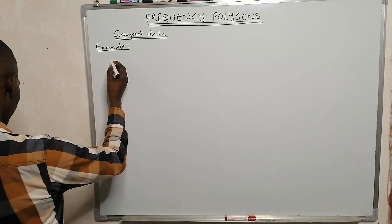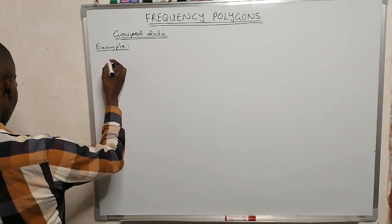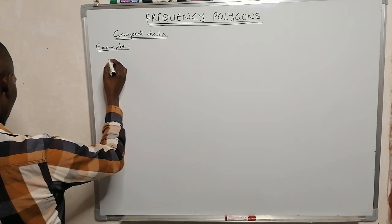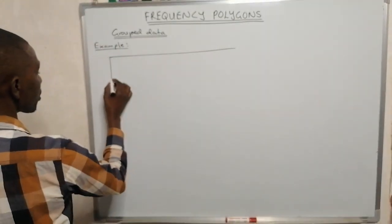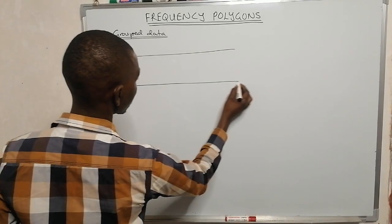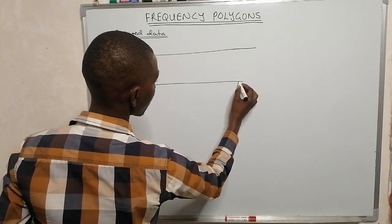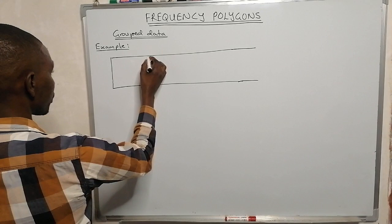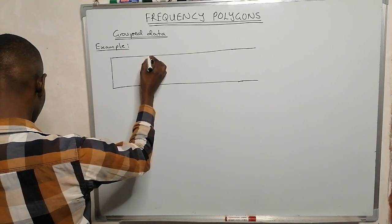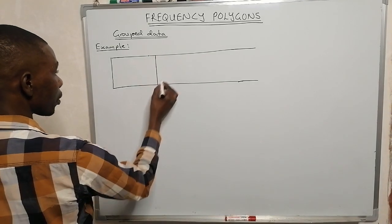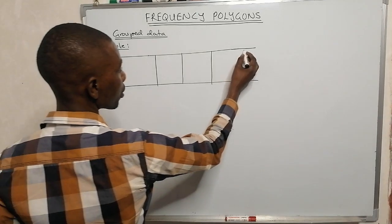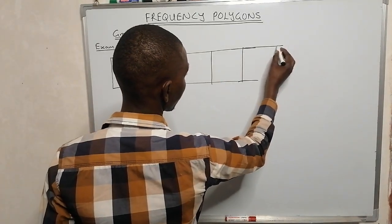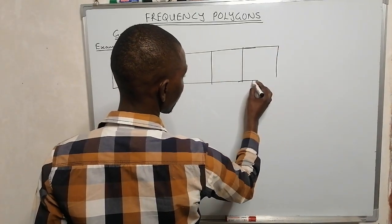For grouped data, our table has age (x) against frequency. The class intervals are: 1, 2, 3, 4, 5 — representing grouped age classes.